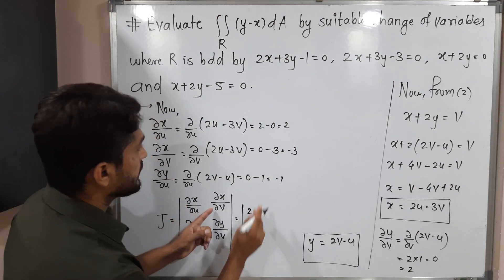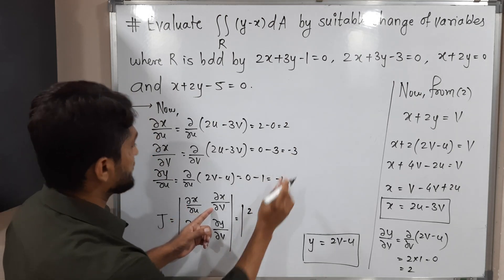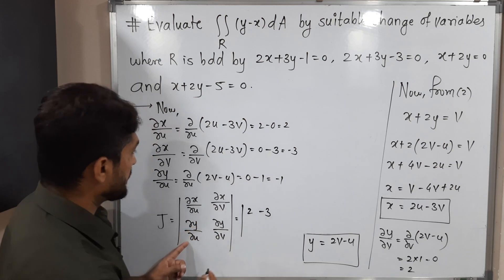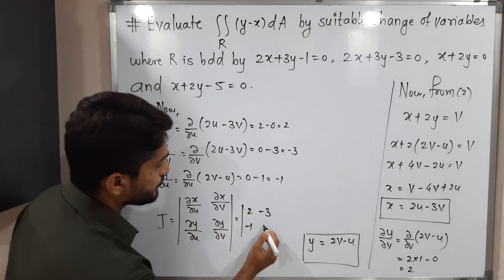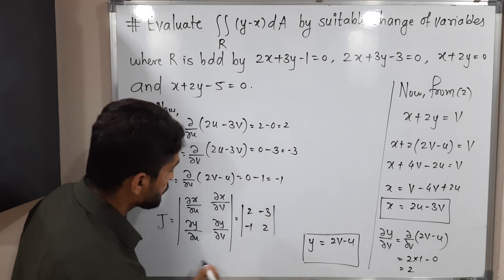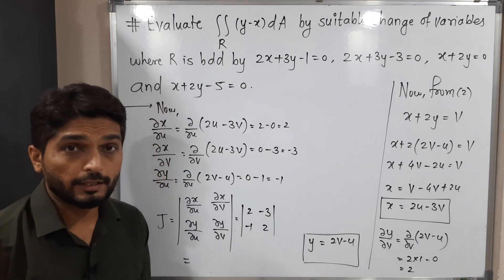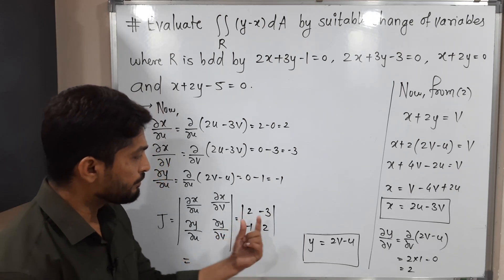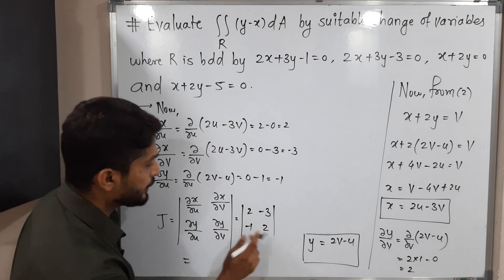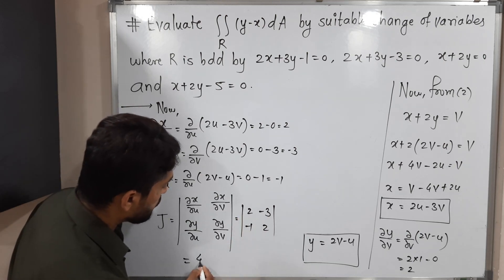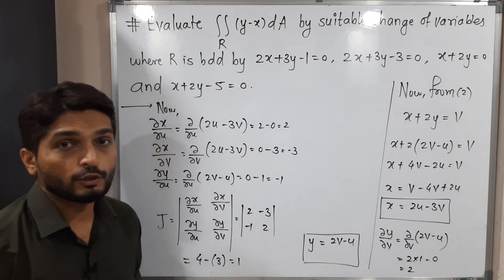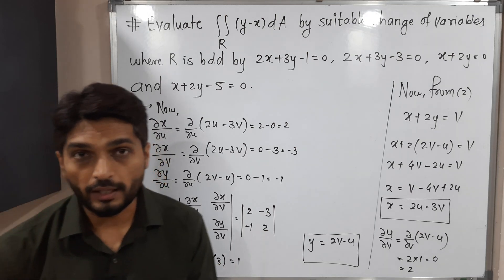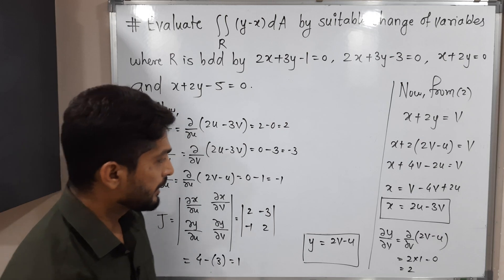Putting all four values into the determinant: entries are 2, minus 3, minus 1, and 2. Computing: (2)(2) minus (minus 3)(minus 1) equals 4 minus 3 equals 1. So the Jacobian J equals 1.